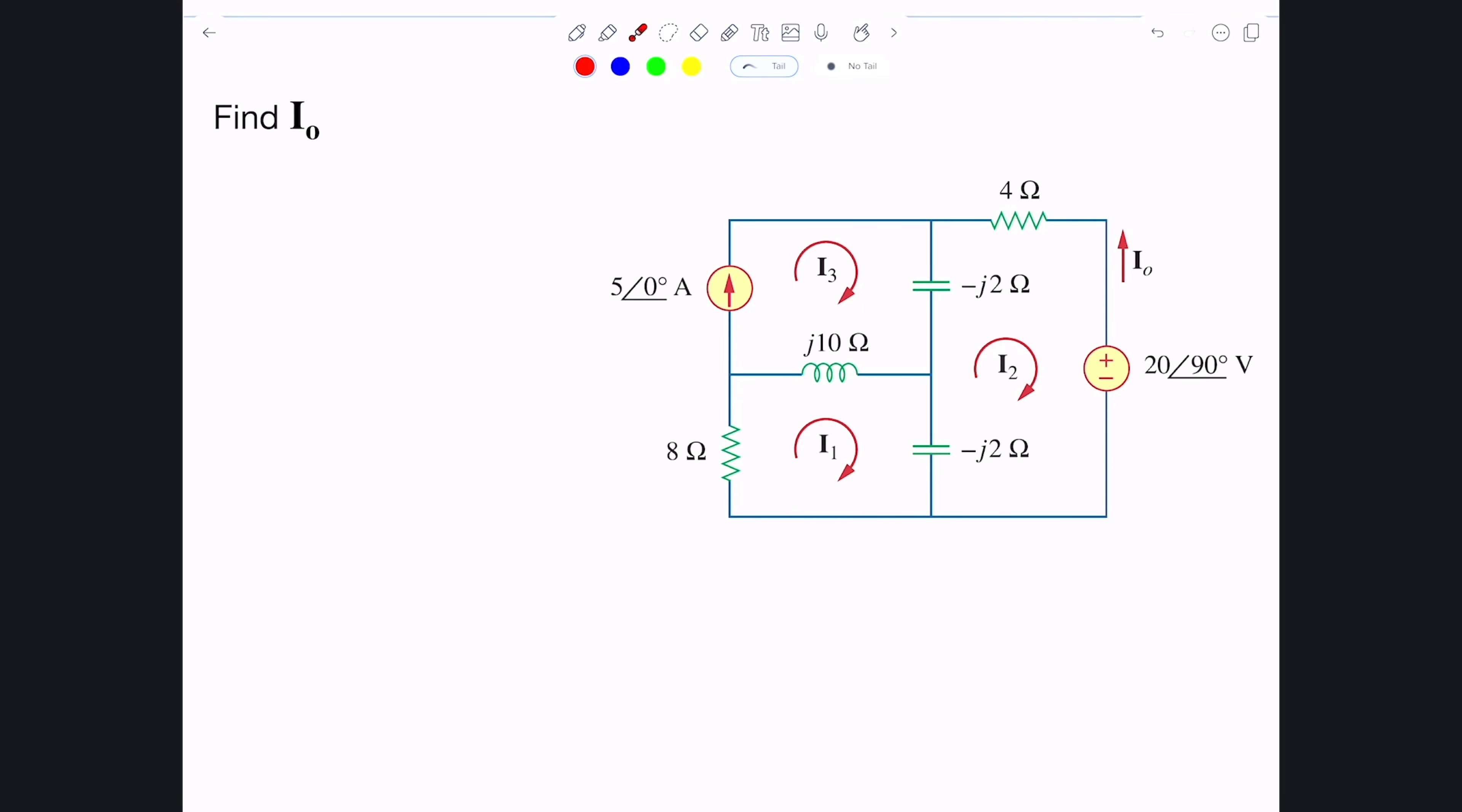In this example we're given a circuit that has already been transformed to the phasor domain and we're being asked to compute this phasor current which is I0. The circuit contains a couple of sources, there's a current source and a voltage source, and since both of them have been transformed to the phasor domain that means they're operating at the same exact frequency.